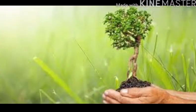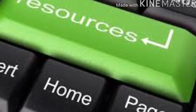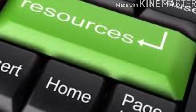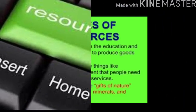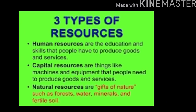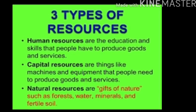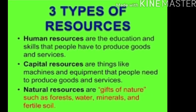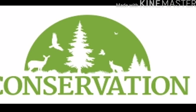First, let's discuss what a resource is. Anything found in our surroundings that satisfies our need is called a resource. There are three main types of resources: natural resources, human resources, and capital or human-made resources.